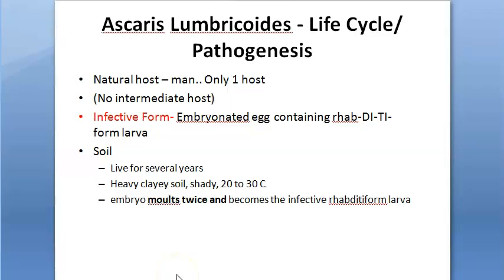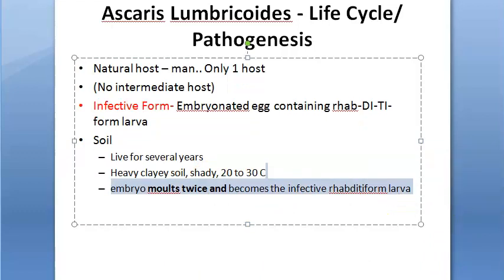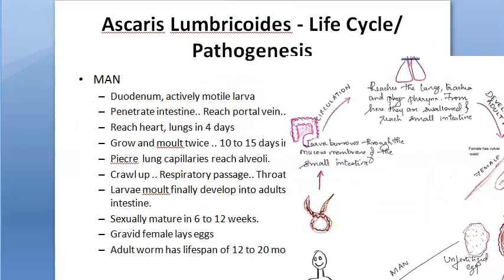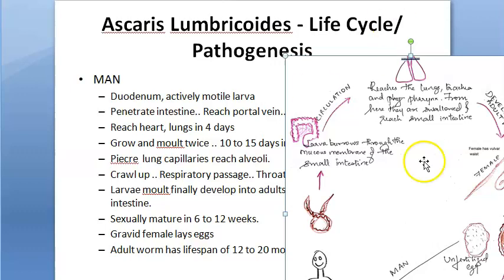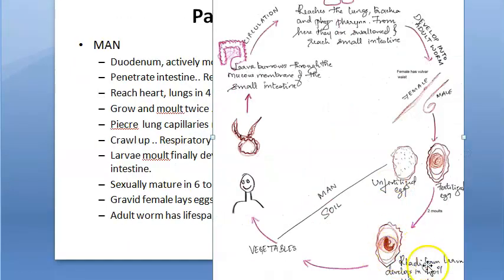Now, let us look at what happens in the man. Now in the man, he eats this vegetable which has all this rhabdiform — the embryonated egg. He eats this embryonated egg, it goes to his duodenum.